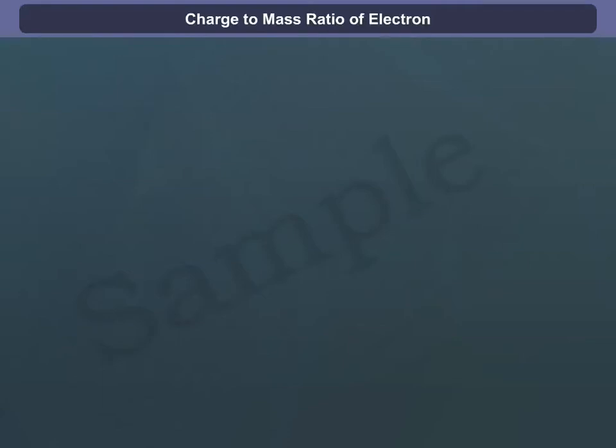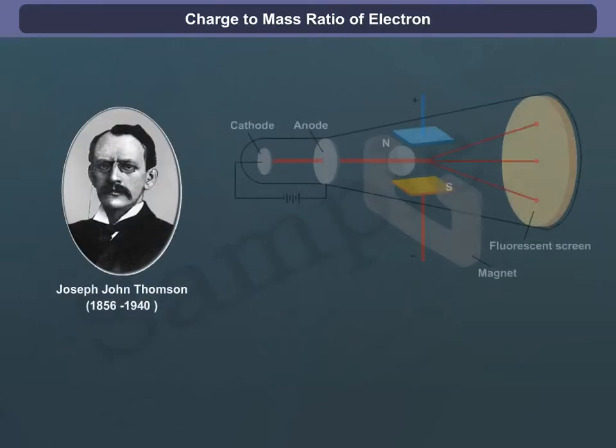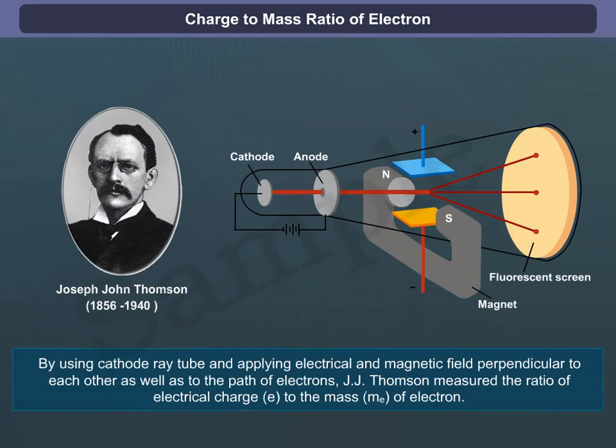Charge to Mass Ratio of Electron. By using a cathode ray tube and applying electrical and magnetic fields perpendicular to each other as well as to the path of electrons, J.J. Thomson measured the ratio of electrical charge (E) to the mass (Me) of the electron.